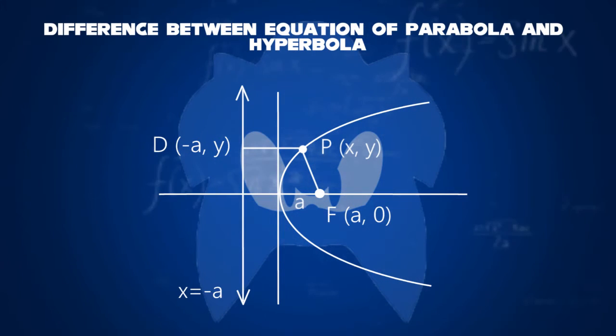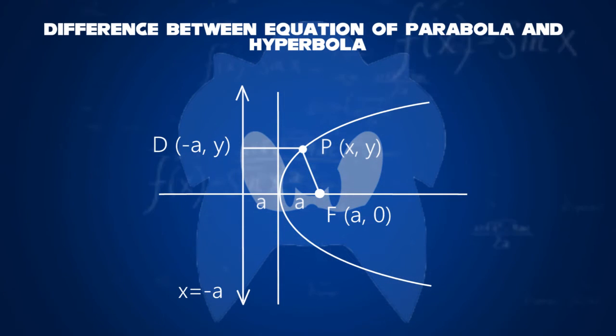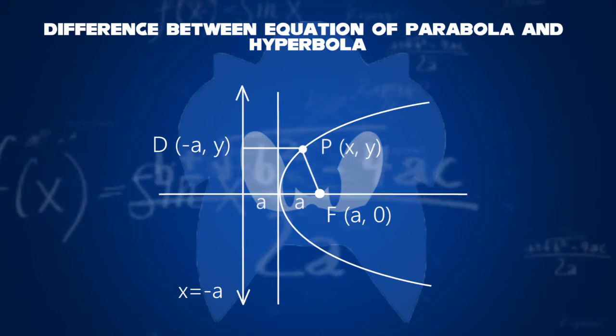The foci is therefore at F of A and 0. Since the directrix and the foci are equidistant from the origin, we get A for the distance between directrix and the origin. We can therefore mark D as minus A and Y.